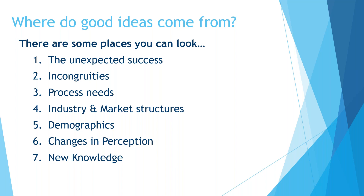So, where to look for new ideas. Some people have identified seven areas you can look: the unexpected success, incongruities, process needs, industry and market structures, and changes in perception or new knowledge. There are varying levels of difficulty in applying each of those, with new knowledge being one of the most difficult because it presents one of the most risky ways to introduce ideas into your business. One of the basic principles is that innovation can be a systematic process — it's not the stroke of genius in the middle of the night. Most good ideas come from a systematic analysis of business opportunities, markets and customer needs.